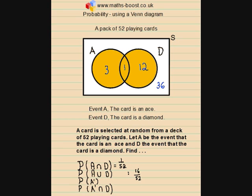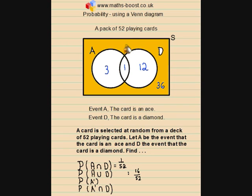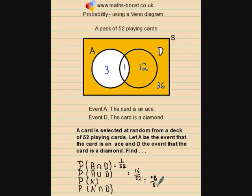The next probability asks for not A — in other words, the probability that the card drawn is not an Ace. This is represented by all the area that isn't associated with event A. That gives us twelve plus thirty-six, for a probability of 48/52.